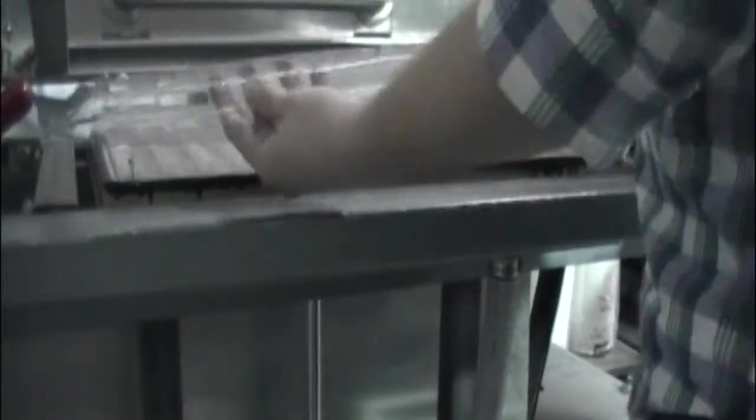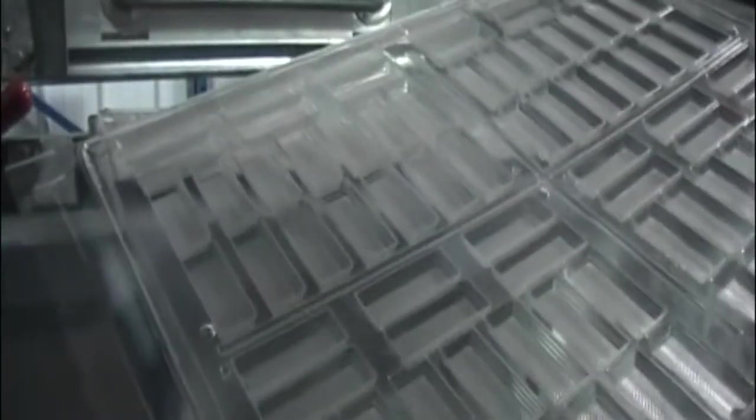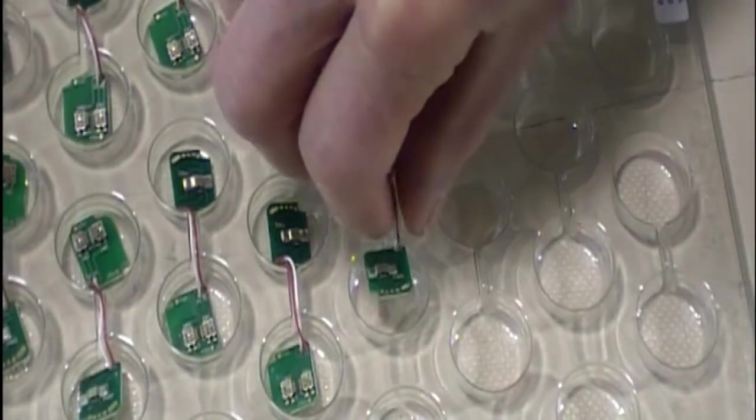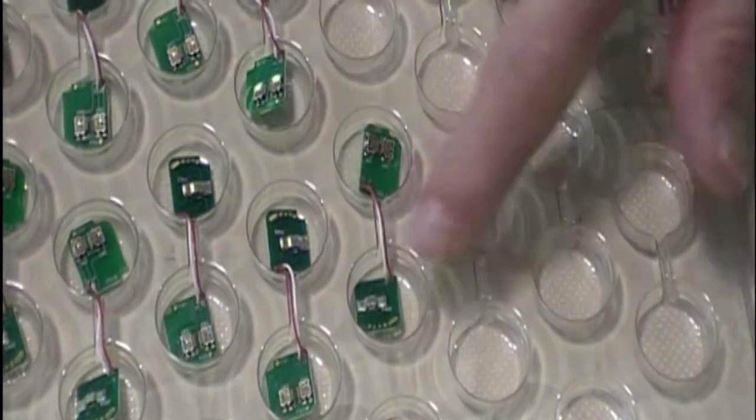We also use vacuum forming to create custom ESD packaging. It provides convenient, reusable protection for PCB assemblies we ship to our customers.